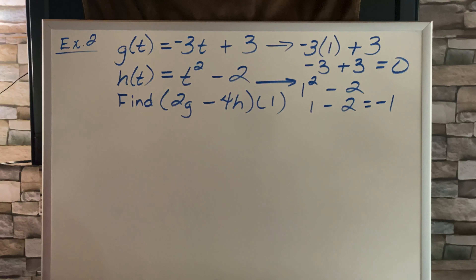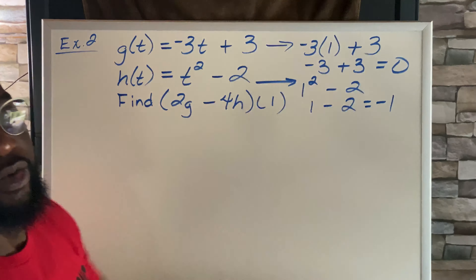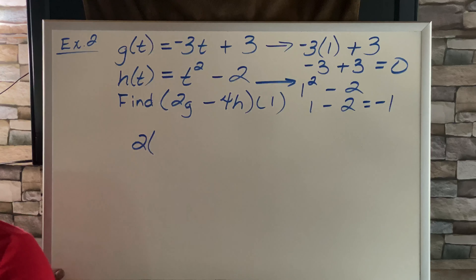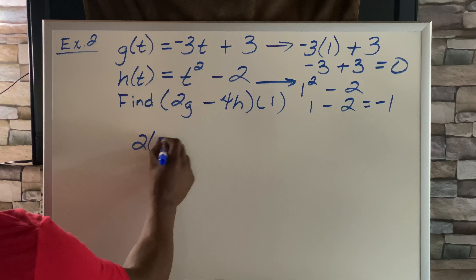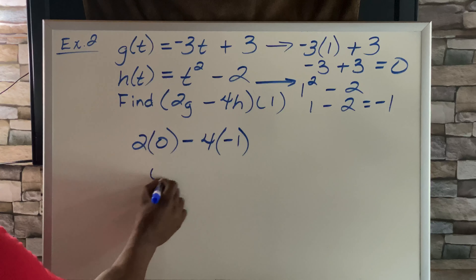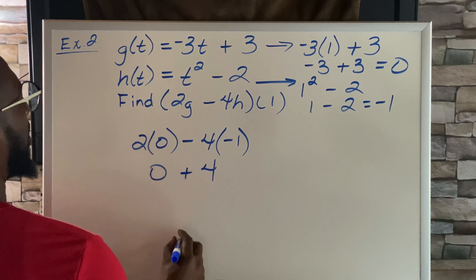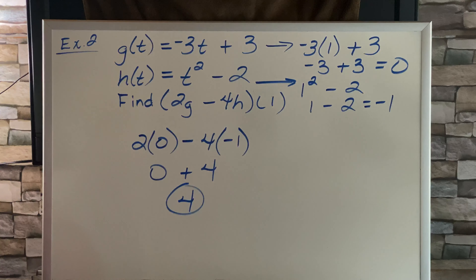Now we take g of t, which equals 0, and h of t, which equals negative 1, and plug them in. So 2 times 0 minus 4 times negative 1. 2 times 0 is 0, and negative 4 times negative 1 is positive 4. The answer is 4.